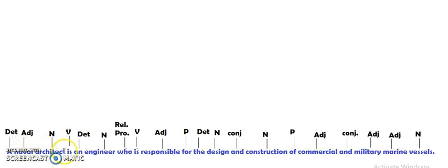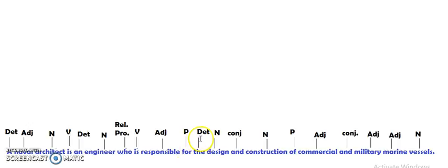'Architect' is a noun. 'Is' is the verb. 'A' is a determiner. 'Engineer' is a noun. 'Who' is a relative pronoun. 'Is' is a verb. 'Responsible' is an adjective. 'For' is a preposition. 'That' is a determiner. 'Design' is a noun. 'And' is a conjunction.